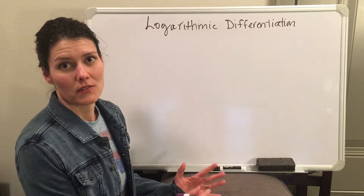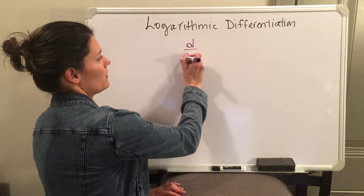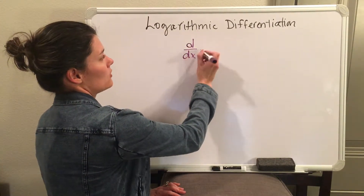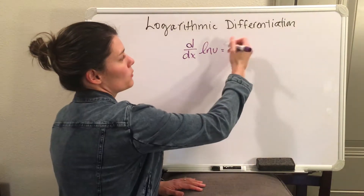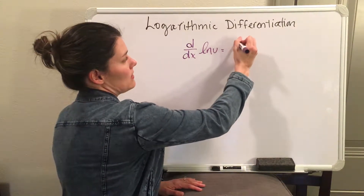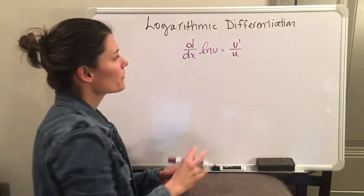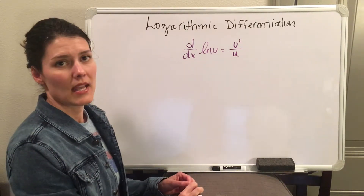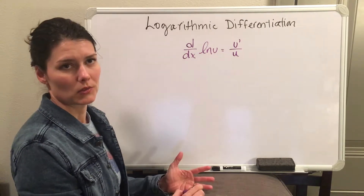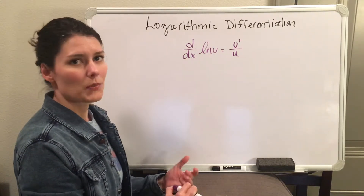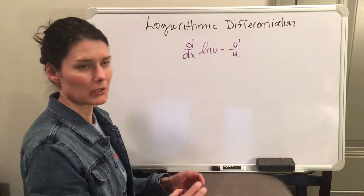First, let's go over the derivative of the logarithm. If I want to take the derivative of a natural log of u, where u can be anything, the rule says it's going to be the derivative of u over u. This can come in handy because when we are dealing with logarithms or natural logs, you can use properties to break down the function to make the calculus easier.